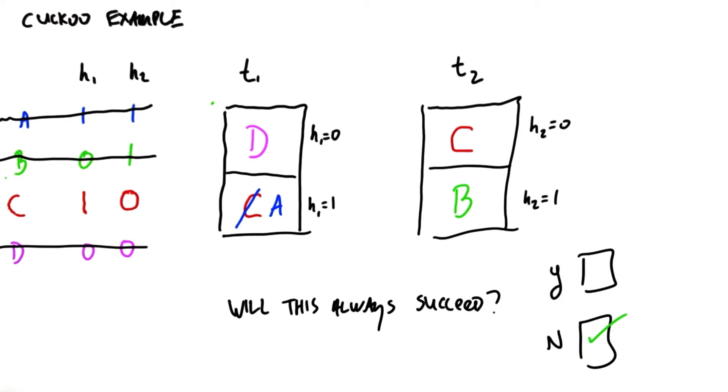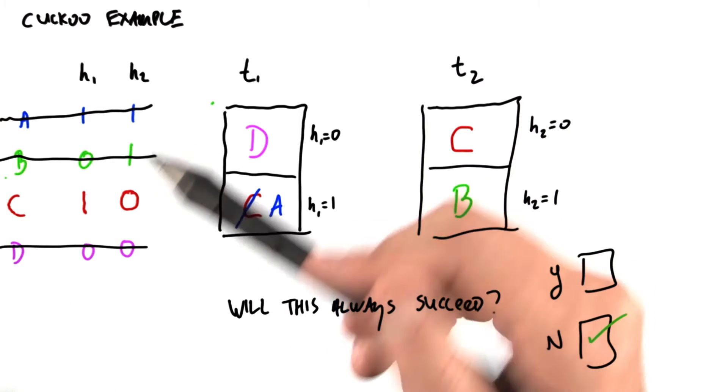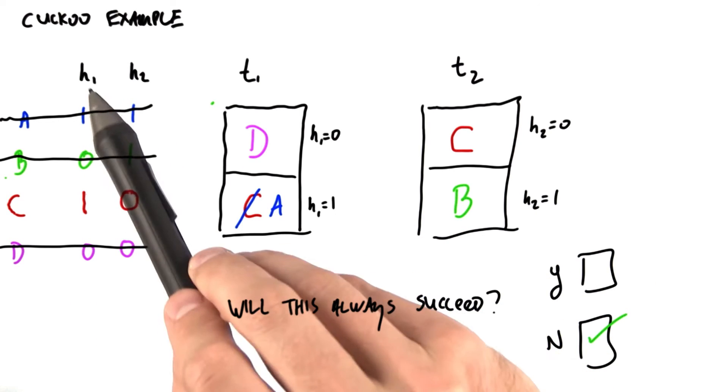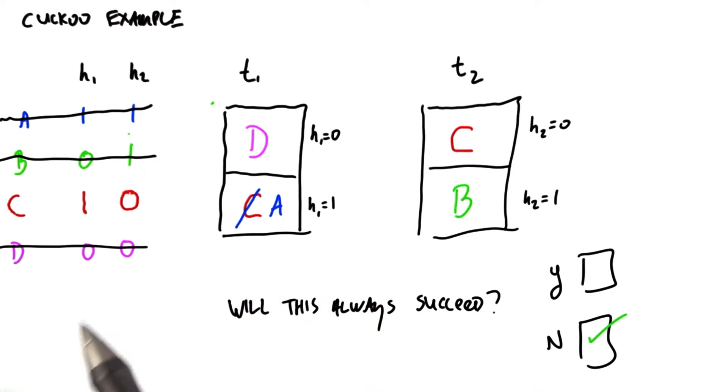We're going to calculate all the hash functions for the item that we want to look up. So for instance, if I want to look up item B, I calculate item B's hash functions. Here, hash function 1 is equal to 0, and hash function 2 is equal to 1.